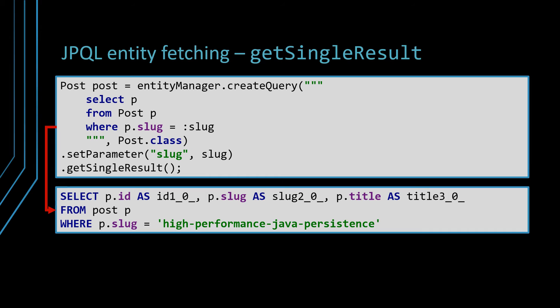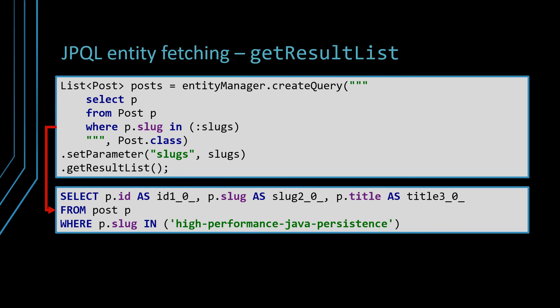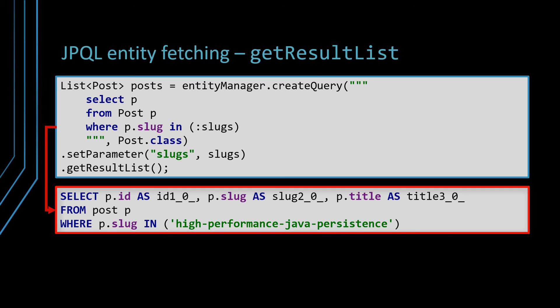Entities can also be fetched via queries, and JPA offers three types of queries: JPQL, SQL, and Criteria API queries. The JPQL query syntax is similar to SQL, with the distinction that it operates on entities and entity properties instead of tables and table columns. For instance, to select a given post entity by its associated slug property, we can use a JPQL query. Notice that we're using the getSingleResult method of the JPA query object in order to return a single entity object reference. Using the getResultList method, we can fetch multiple entities that match a given filtering criteria. Notice that the underlying SQL query is similar to the executing JPQL query.